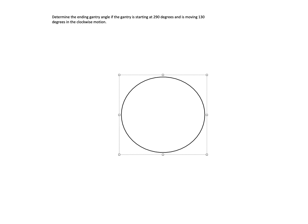So the gantry has four cardinal angles. Up top is zero degrees but it can also be referred to as 360 degrees. On the bottom would be 180 degrees.